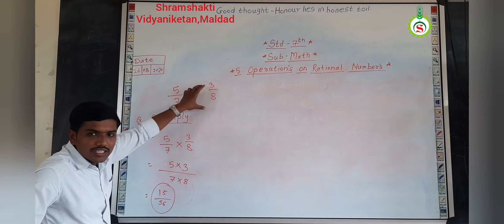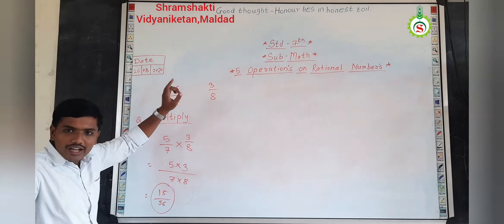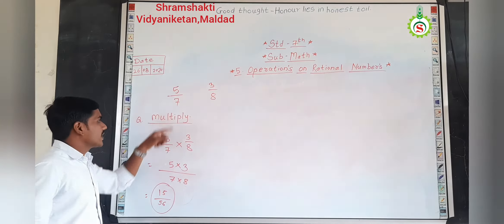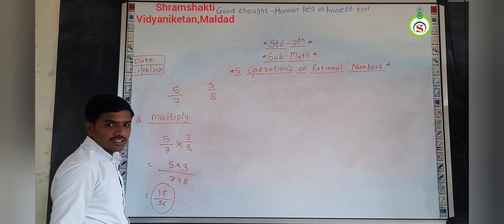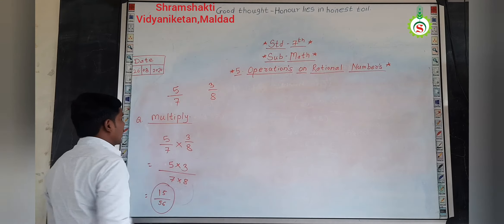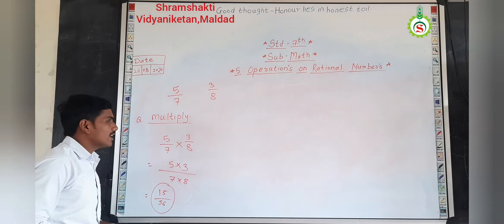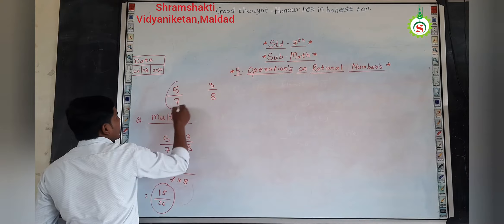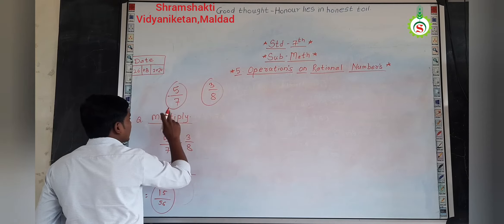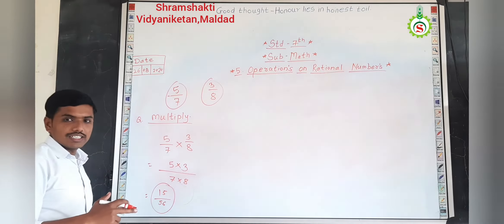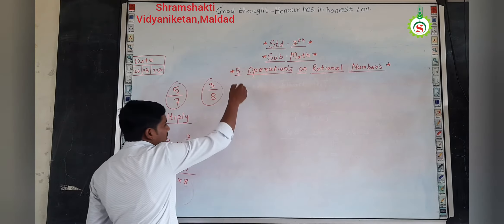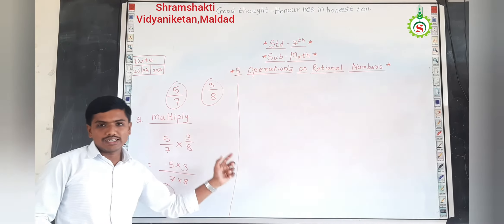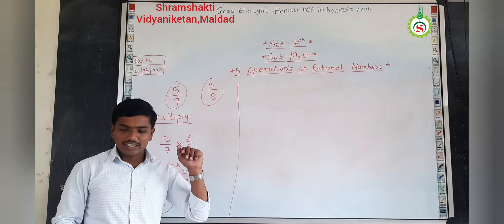On these same numbers, same rational numbers, we have done addition also, then we have done subtraction also, and at the third question, we have multiplied those rational numbers. That means, all three operations may occur on the same rational numbers — that is addition, subtraction, and multiplication. So, for more practice, we will take more examples of the multiplication of rational numbers.